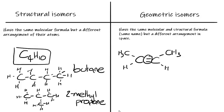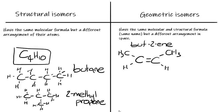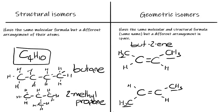Because this double bond cannot rotate — meaning this methyl group cannot rotate around to be on the bottom — when this molecule is formed, either the methyl group is on the top and the hydrogen is on the bottom, or vice versa. So we could draw butene in two ways: with both methyl groups on the same side, or with one methyl group on the top and one on the bottom. We differentiate these by calling them cis-butene — cis meaning on the same side — and trans-butene, with both on opposite sides.